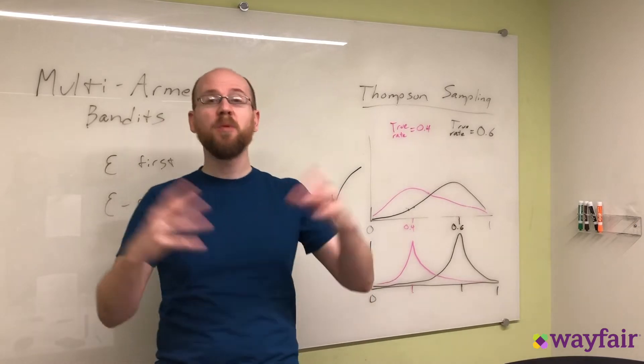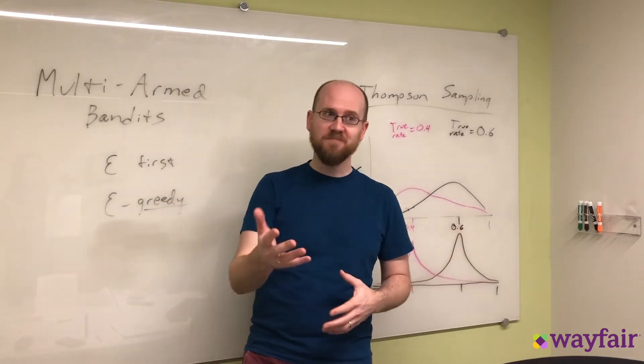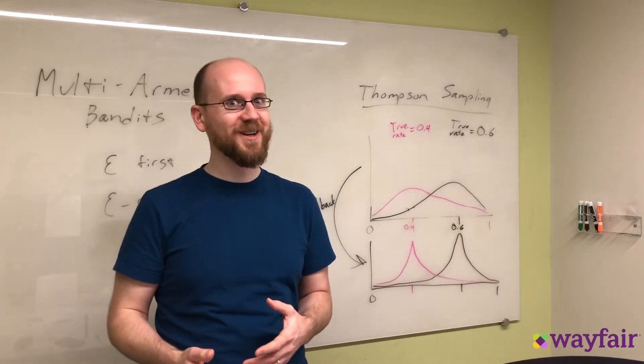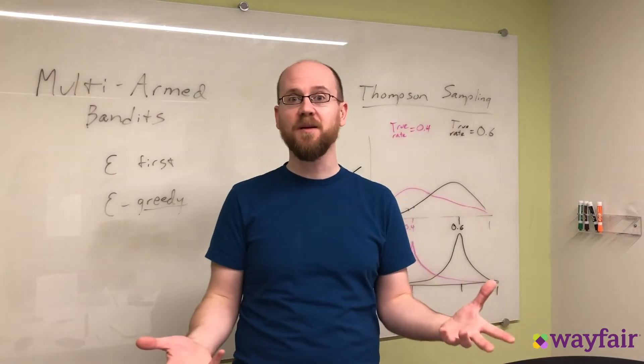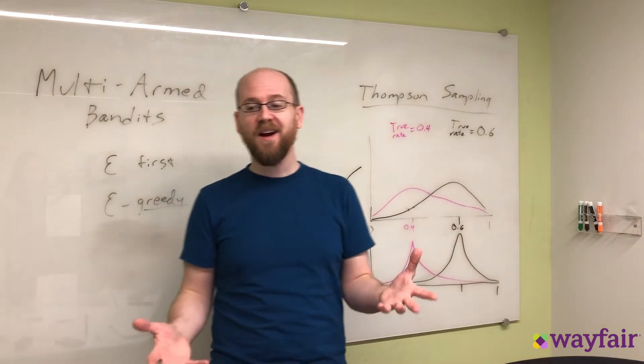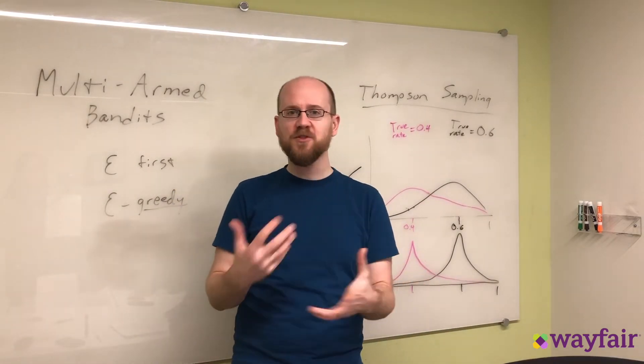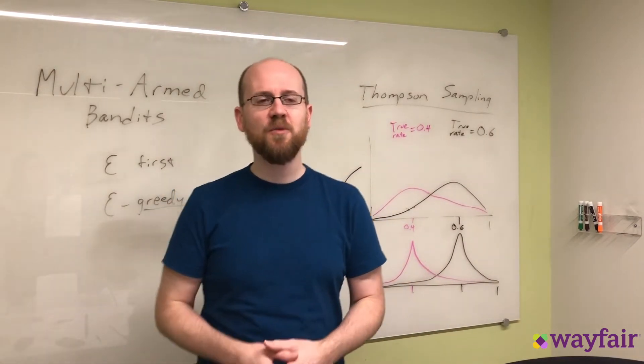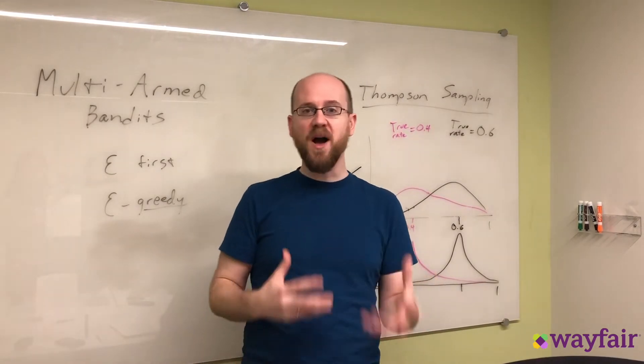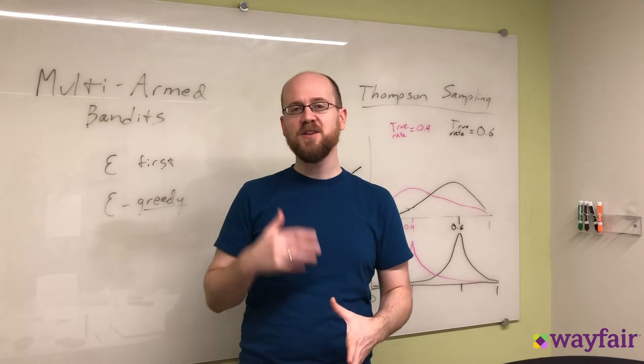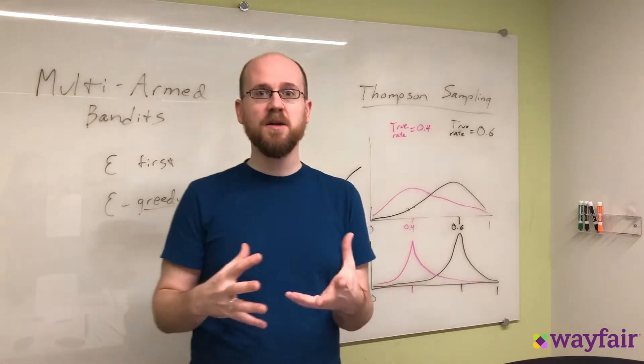Similarly, if you have a whole bunch of products, which we have a whole bunch of products, and you need to sort them based on popularity, well, each one of the products is a bandit, and it has an unknown rate of return and unknown popularity. So you sort them in an order, you get feedback based on who is buying what, and then you can reorder them based on that feedback.